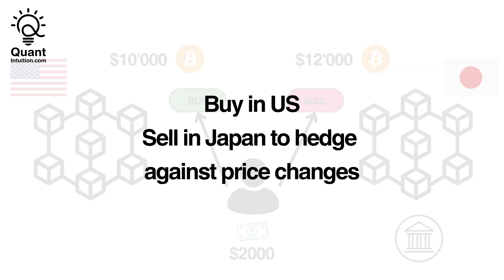To illustrate this, think about the Bitcoin arbitrage example from the previous video. There, we bought Bitcoin in the US and at the same time sold Bitcoin in Japan. This can basically be broken down into buying Bitcoin in the US and then using Japan to hedge our position in another market. This allowed us to get a risk-free profit since we could cancel out any price movements in Bitcoin due to the hedge.